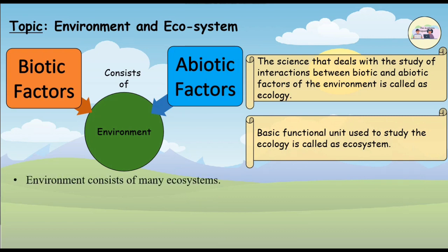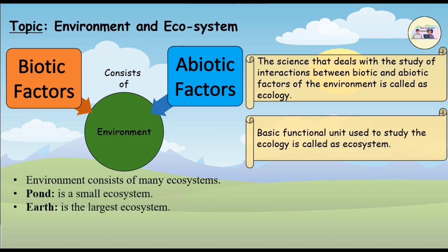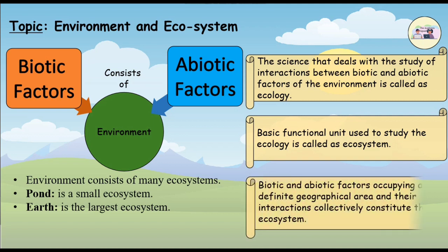The basic functional unit used to study ecology is called an ecosystem. Environment consists of many ecosystems. A pond is a small ecosystem, whereas the Earth is the largest ecosystem. In brief, biotic and abiotic factors occupying a definite geographical area and their interactions collectively constitute the ecosystem.